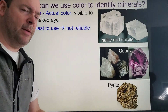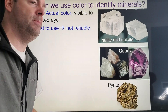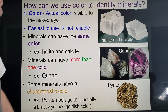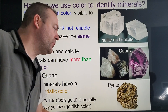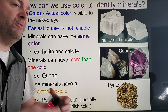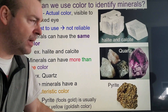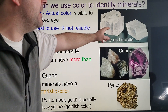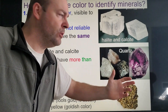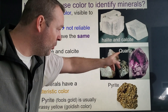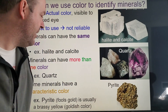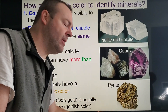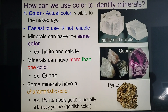We'll start with color — it's the easiest test to do, although it's usually the least reliable because many minerals can be the same color, or one mineral can have many different colors. Halite and calcite, for example, look exactly the same color, so color wouldn't be great there. Quartz has many different colors, so it wouldn't be great for that either.